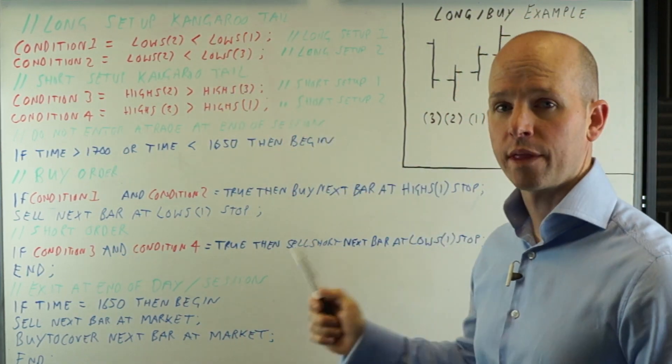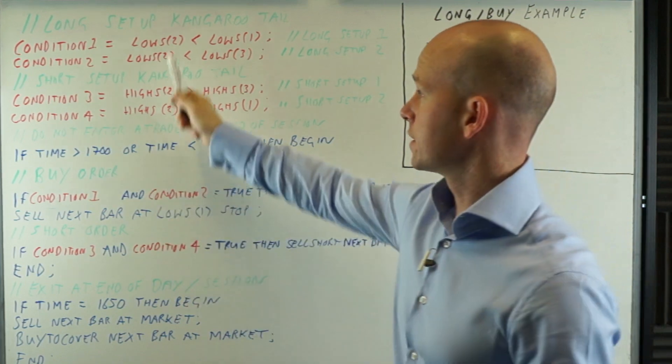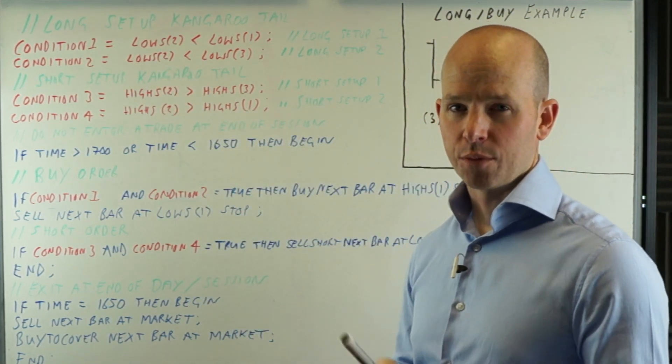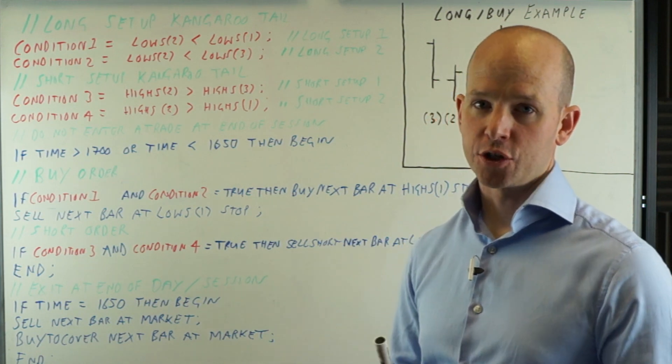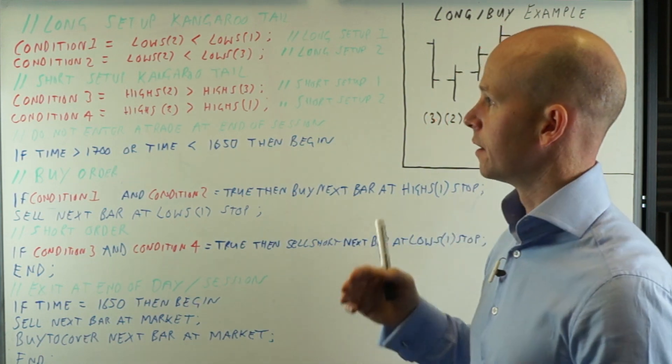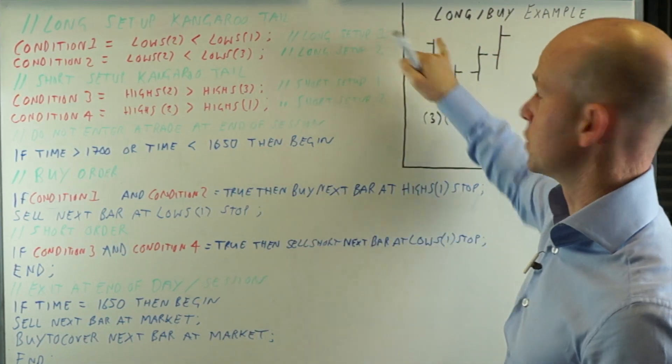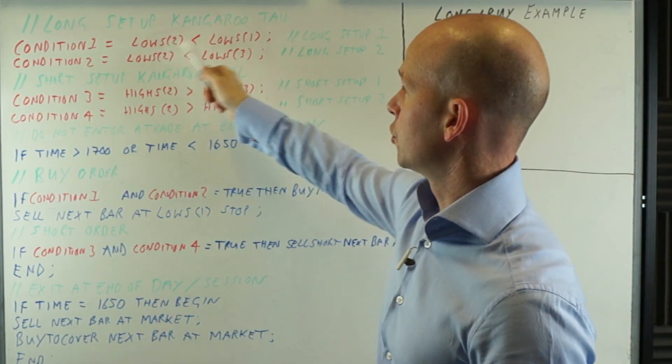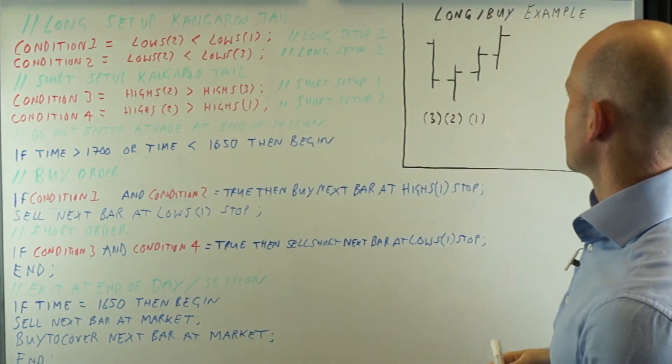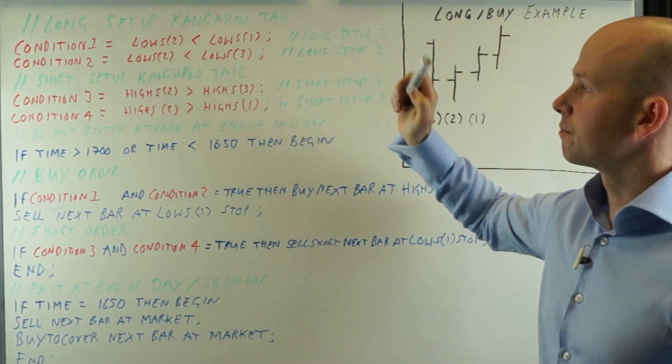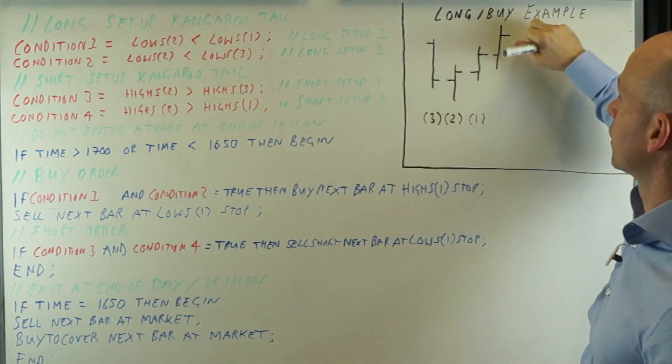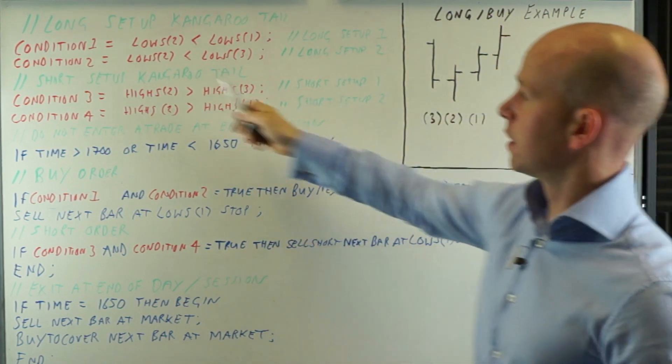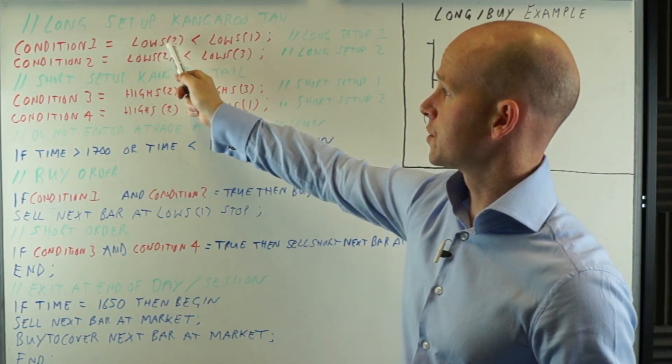Now, what that means is low is the lowest price. S means the low of the session. It could be the daily bar or the session. I don't need to go into that now, but the session takes into account that whole bar. Now, you've got these numbers here, two and one. What that means is, so when this code is actively looking, we're working on this bar here, this fourth bar. And what we're saying is the lowS2, which is two bars back, so I've just put a little number there. So this one here, so that low is less than the lowS1, which is this bar here.